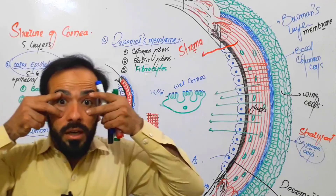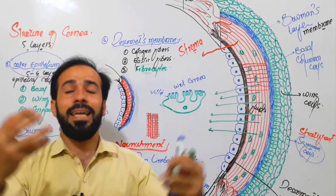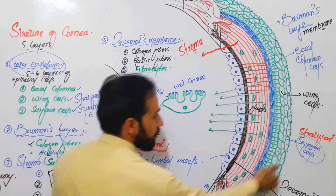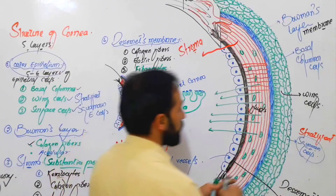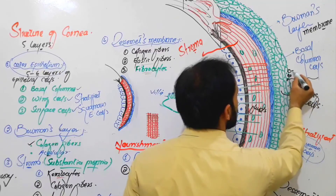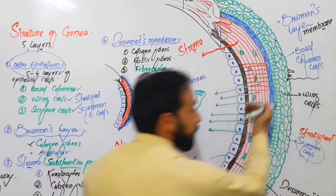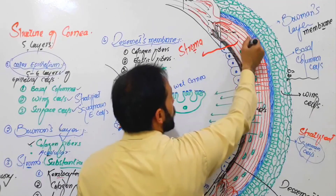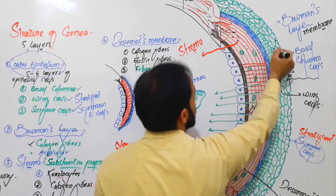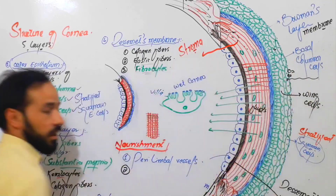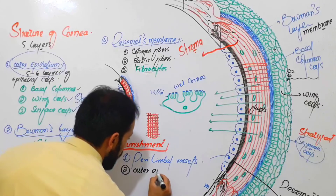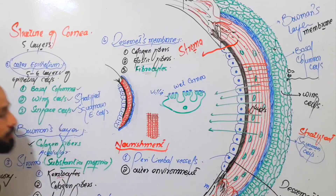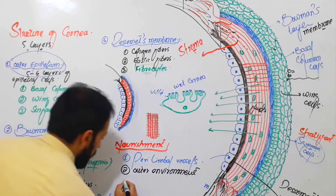Both eyes are open and in contact with the atmosphere, so from the atmosphere, oxygen enters these cells. The outer epithelium gets oxygen from the outer environment. Oxygenated blood also comes and through diffusion all the nutrients enter from the inner side. So from the outer environment also, oxygen is provided to the outer epithelium.